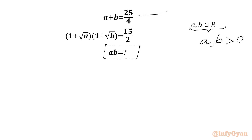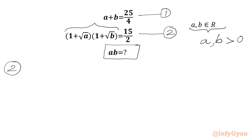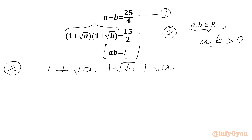We label these as equation 1 and equation 2. Beginning with equation 2, we multiply the two brackets: 1 times 1 is 1; 1 times √b is √b; √a times 1 is √a. So we get √a plus √b plus √a times √b, which is √(ab).